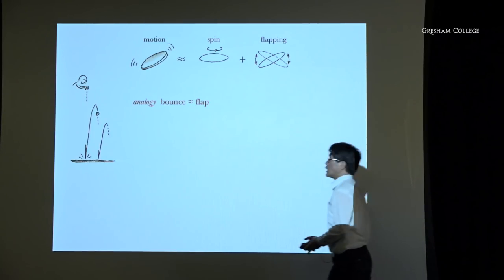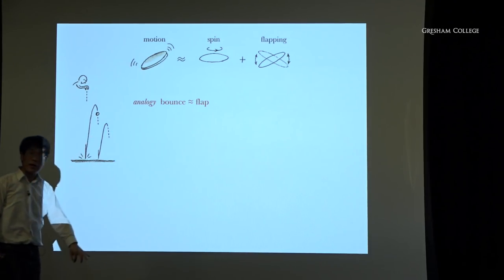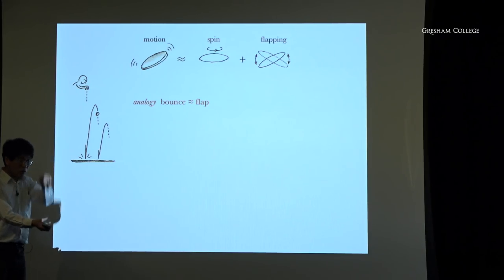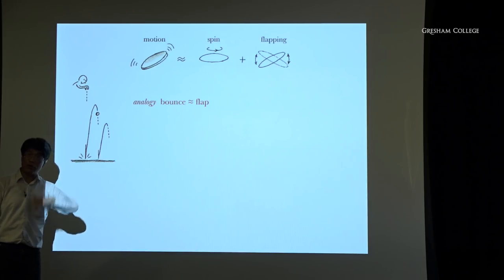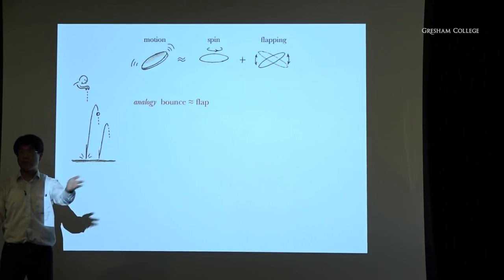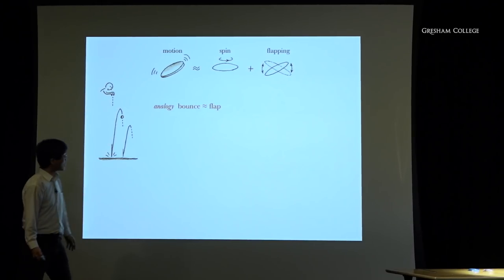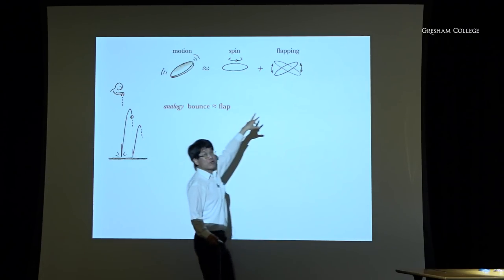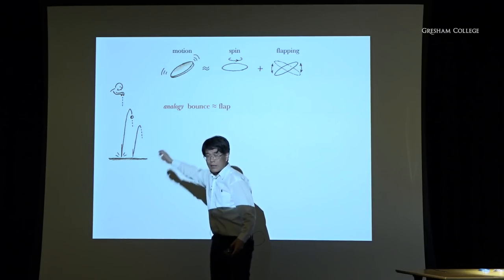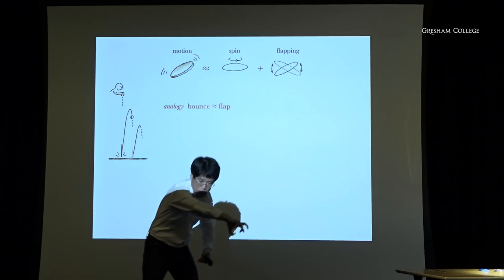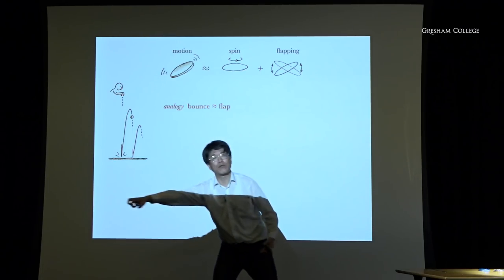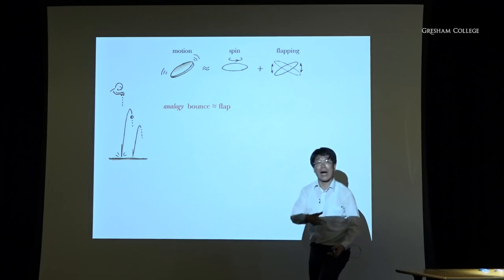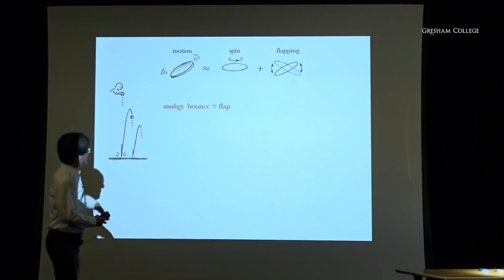A good analogy is a ball bouncing on the ground — like a superball. Each time it bounces a little less — coefficient of restitution — and eventually stops. This is a beautiful example of a convergent geometric series. Each bounce is an analogy for one flap. You take this bouncing and spread it around the circle on the floor — that is what the flapping is. So it's one dimension up from the bouncing.